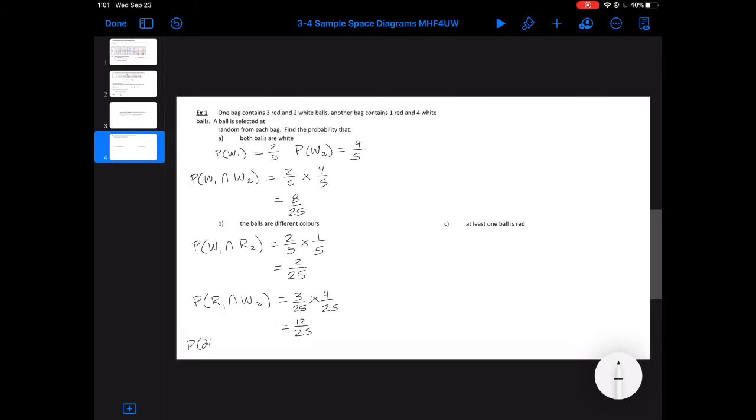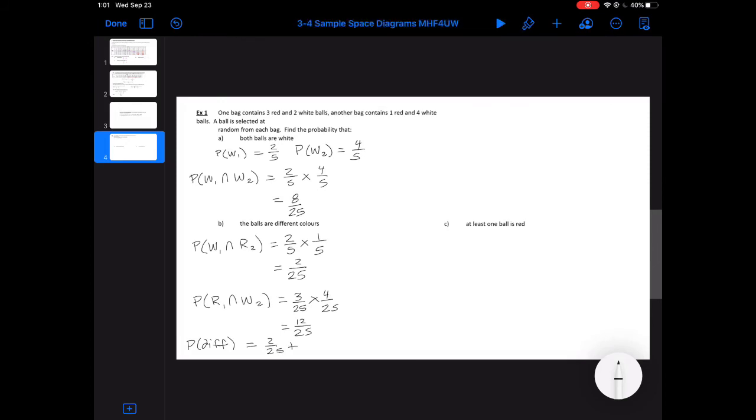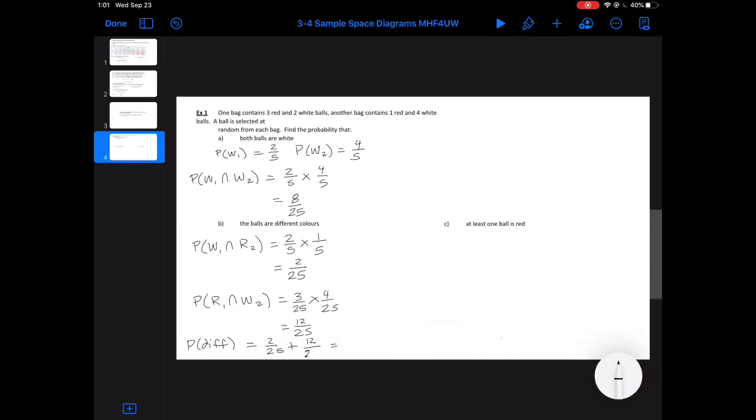Now to get our total so the probability that the balls are different is we're going to add those two together. So 2 out of 25 plus 12 out of 25 is going to give us a total of 12 out of 25 which gives us a probability that they're different of 14 out of 5 so just over half.